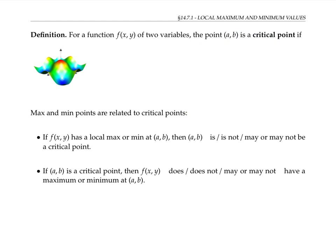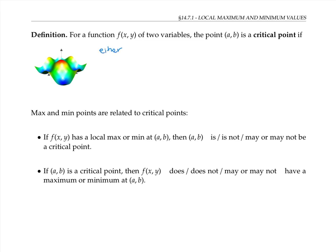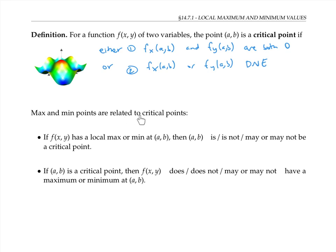The situation is very similar for functions of two variables. If f of x, y is a function of two variables, the point (a, b) is called a critical point if either the partial derivatives f sub x at (a, b) and f sub y at (a, b) are both zero, or f sub x at (a, b) or f sub y at (a, b) do not exist. Max and min points are related to critical points in the same way as before: if f of x, y has a local max or local min at (a, b), then (a, b) must be a critical point. But if (a, b) is a critical point, then f of x, y may or may not have a maximum or minimum at (a, b).